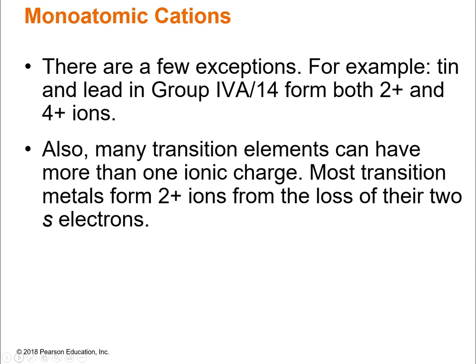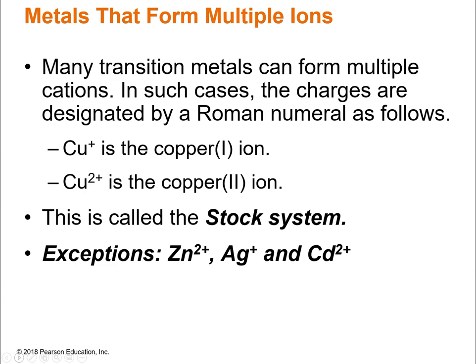There are some exceptions, and those exceptions are mainly within the transition elements — that's the D block. There are others, like lead, that form multiple ions. If you have a metal that forms multiple ions, you have to differentiate between the different ions when naming. For this, we're going to use the stock system. All you have to do is indicate the charge using Roman numerals.